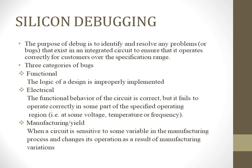Functional bugs, also called logic bugs, are where the logic of a design is improperly implemented. Electrical bugs are where the functional behaviour of the circuit is correct but it fails to operate correctly in some part of the specified operating region, i.e., at some voltage, temperature, or frequency. Manufacturing or yield bugs occur when a circuit is sensitive to some variable in the manufacturing process and changes its operation as a result of manufacturing variations.